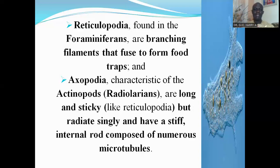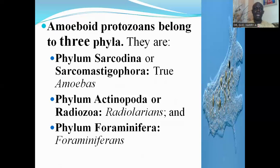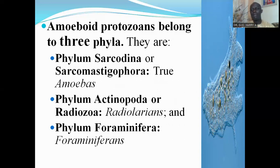Amoeboid protozoans are classified into three phyla: the phylum Sarcodina or Sarcomastigophora, which consists of the true amoeba; the phylum Actinopoda or Radiosua, which has the radiolarians; and the phylum Foraminifera, which has the foraminifera.